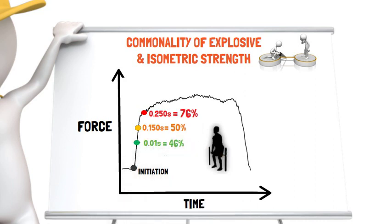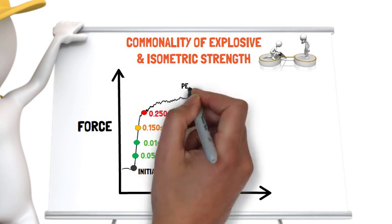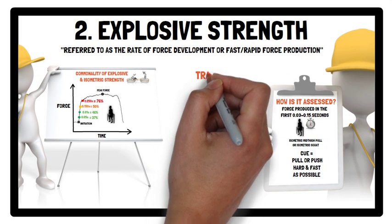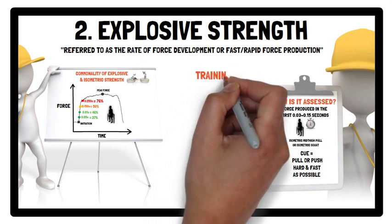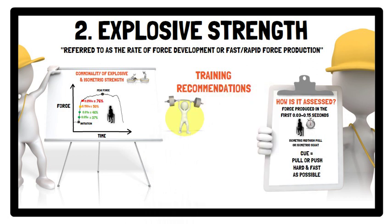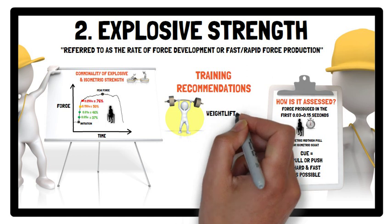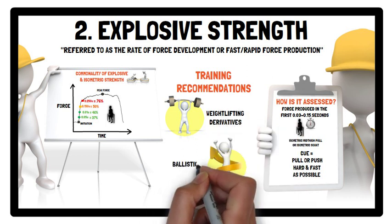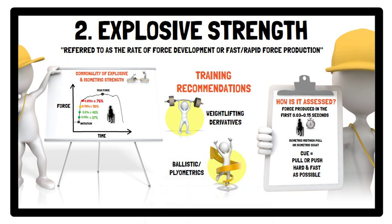Therefore, when testing explosive strength, it is recommended to use a measure that occurs no later than 0.15 seconds from the onset of effort. In terms of how to train explosive strength, weightlifting derivatives are recommended as a primary method, and ballistic and plyometrics with minimal counter-movement can also be used.